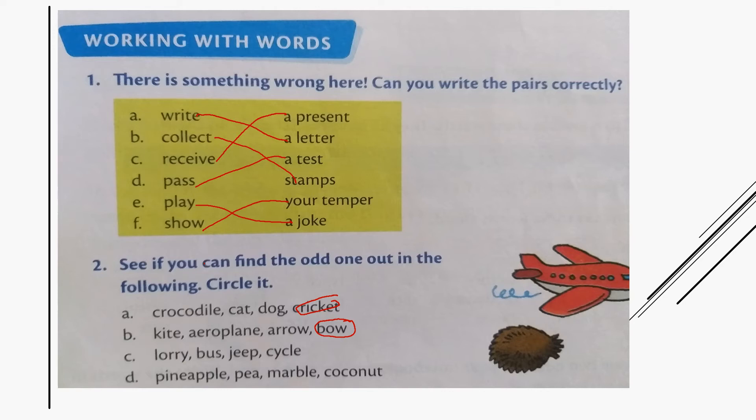Next one: lorry, bus, jeep, cycle. It is cycle. Why? Because lorry, bus, and jeep have more than two wheels, but cycle has only two wheels.